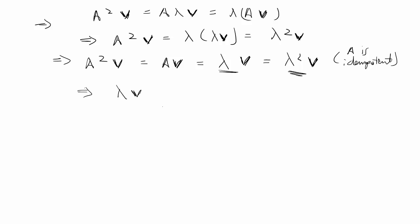We'll have lambda V equal to lambda squared V. Then we can move that all to one side, so we have zero equal to lambda squared V minus lambda V. If we pull out the eigenvector, we'll have lambda squared minus lambda equals zero.